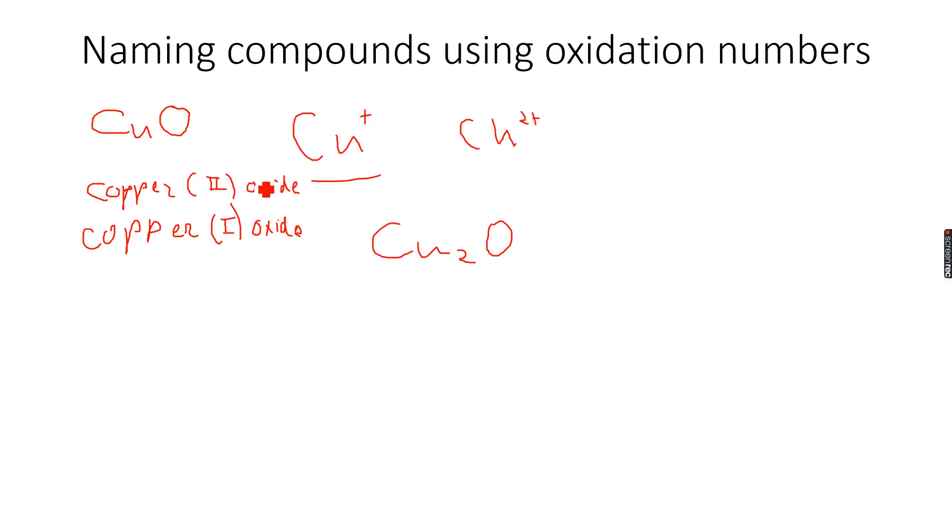Copper 2 oxide is CuO and copper 1 oxide is Cu2O. The Roman numeral in the bracket tells us the oxidation state of the element.